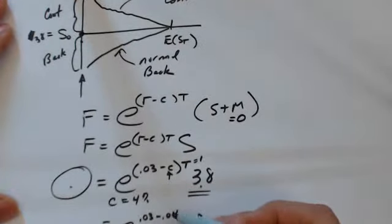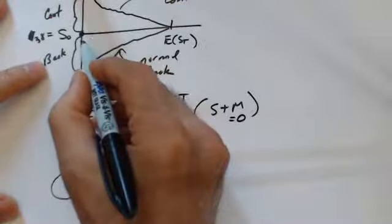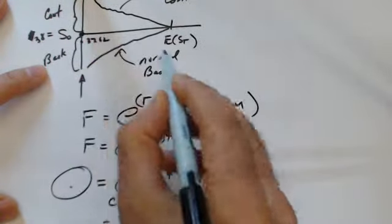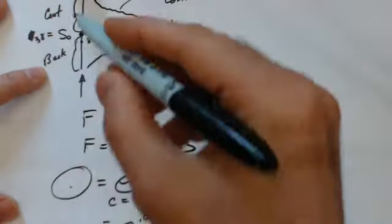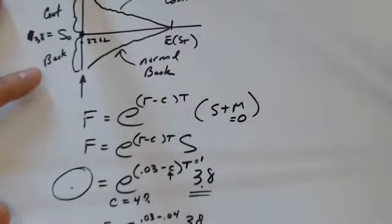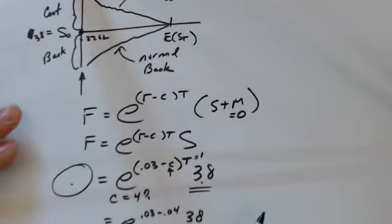And as soon as it starts going above 3%, say to 4%, then you're going to be at a futures price that's lower. In this case, 37.62 is where it is. And if you keep increasing C, you're just going to continue to move down on this graph into backwardation, backwardation. Now, let's look at problem 9.